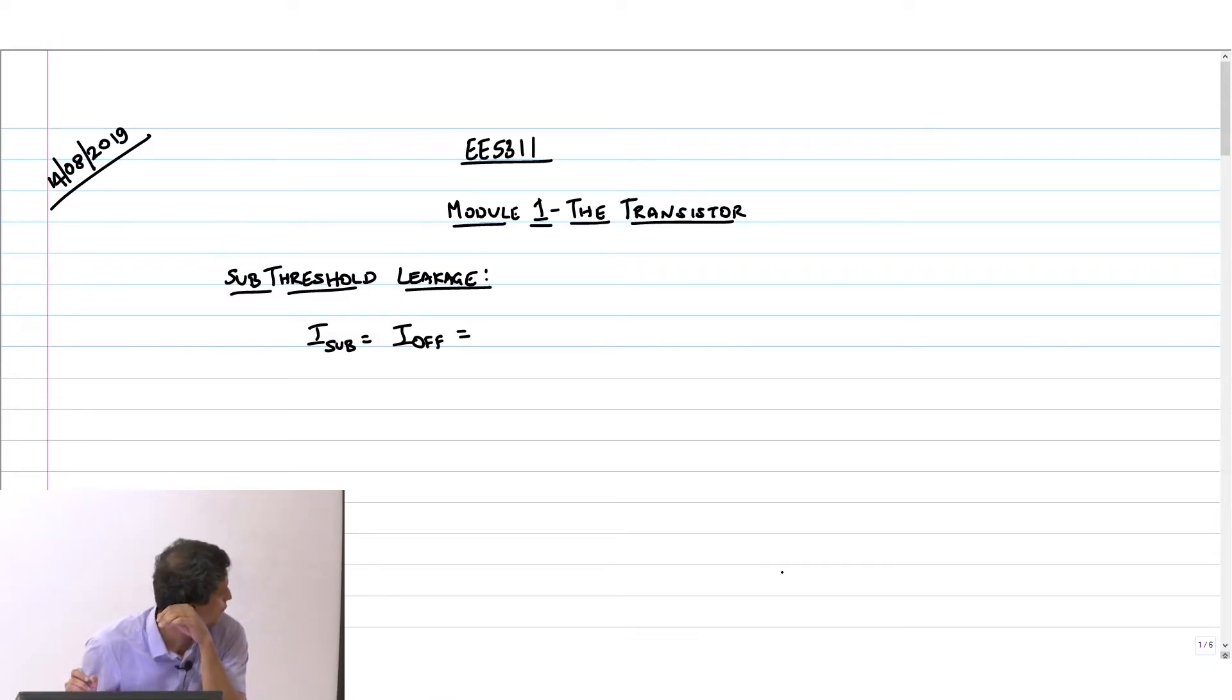Today we will see a couple more leakage mechanisms, but by default if you say I_off, it is the sub-threshold leakage. This is some I_0 e^(V_gs - V_t)/(N*phi_t) times (1 - e^(-V_ds/phi_t)) times (1 + lambda*V_ds). This was the equation for sub-threshold leakage.